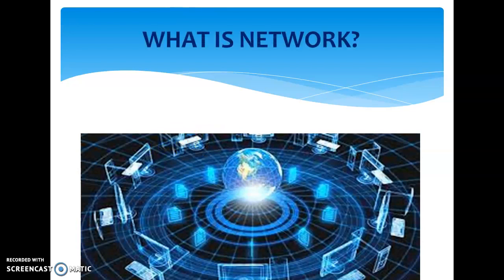Do you know something about a map? A map is a visual representation of different locations of a country displayed on a flat surface. It tells you about the location of a particular city, a particular place, a particular country. It also displays the areas connected through a network of roads, railway lines, or airways. These networks help us in travelling from one place to another so that we can meet our friends and relatives living at far-off places. So, what is a network?